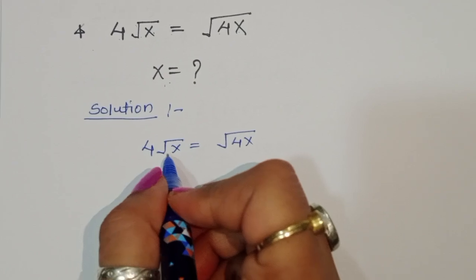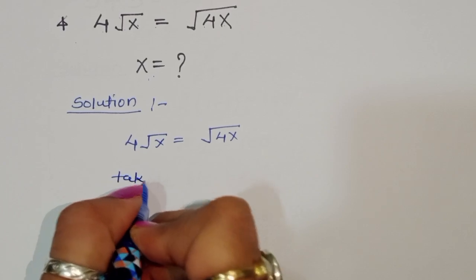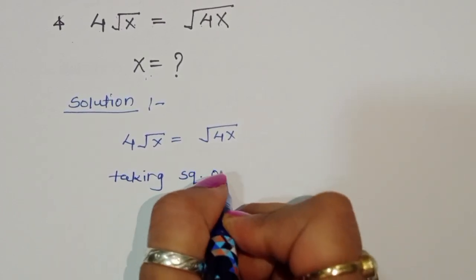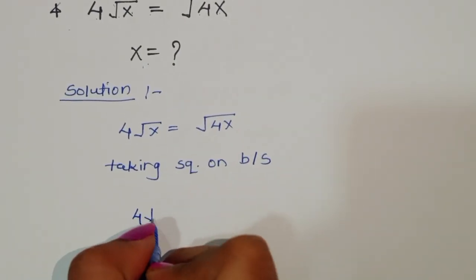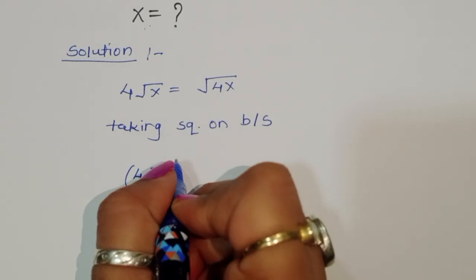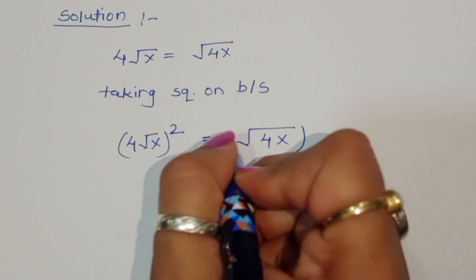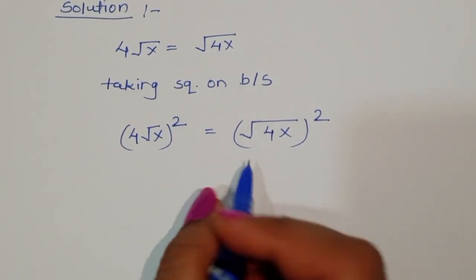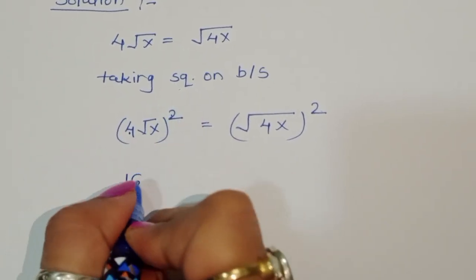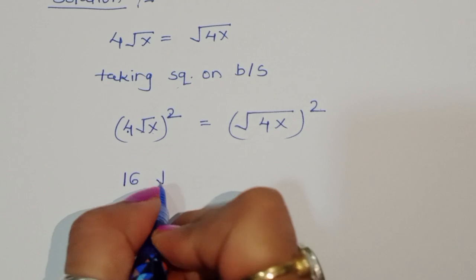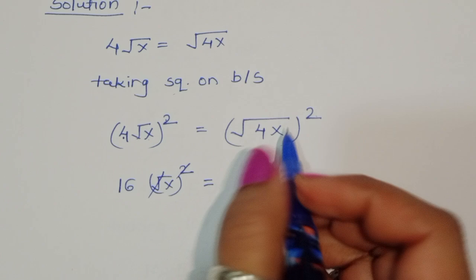First, we need to cancel the square roots, so we take squares on both sides. Taking square on both sides: (4√x)² is equal to (√(4x))². Now 4² is 16, and the square cancels the square root.